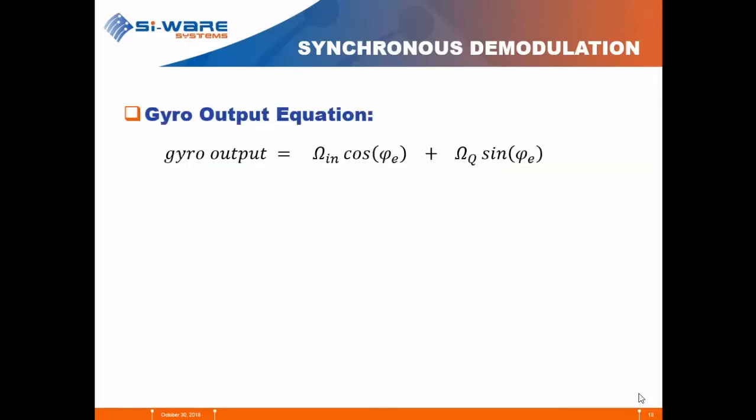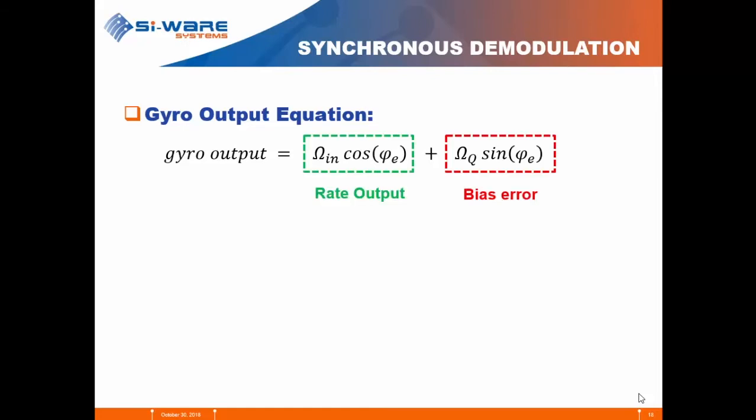The gyro output in this case can be written as omega_n (the Coriolis) multiplied by cosine(phi_error) — which is ideally the only output — plus omega_q (the amplitude of the quadrature) multiplied by sine(phi_e). The first term is the desired rate output and the second term is the bias error.